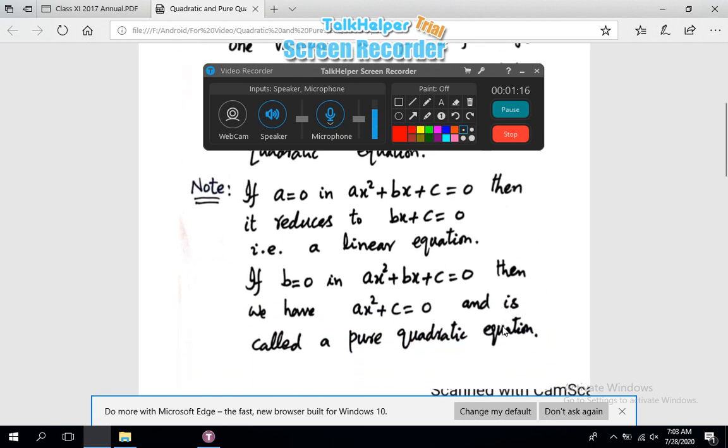Moreover, if in standard form b = 0, that is if this term is equal to 0, then we have ax² + c = 0, and this is the form called pure quadratic equation. Hope now you are clear about quadratic equation,